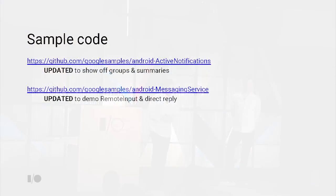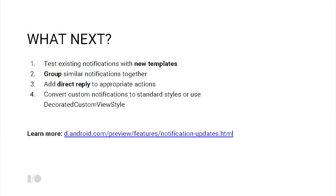There are lots of resources online — DP3 is out, so go get that package. We've updated sample code to show off groups and summaries in our active notification sample on GitHub, and the messaging service sample demonstrates remote input. As developers, here's what to do: test your existing notifications on N; if you have lots of notifications you're not grouping, please group them — nobody likes 36 notifications in the morning; add direct reply where appropriate; and if you're using custom notifications, look at Decorated Custom View Style so users get app attribution and the expand affordance.